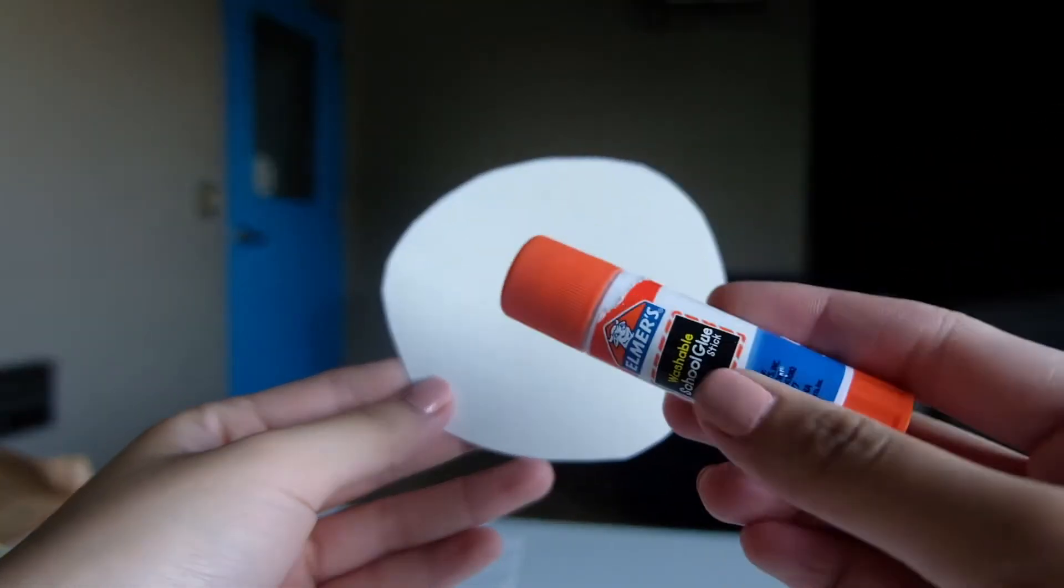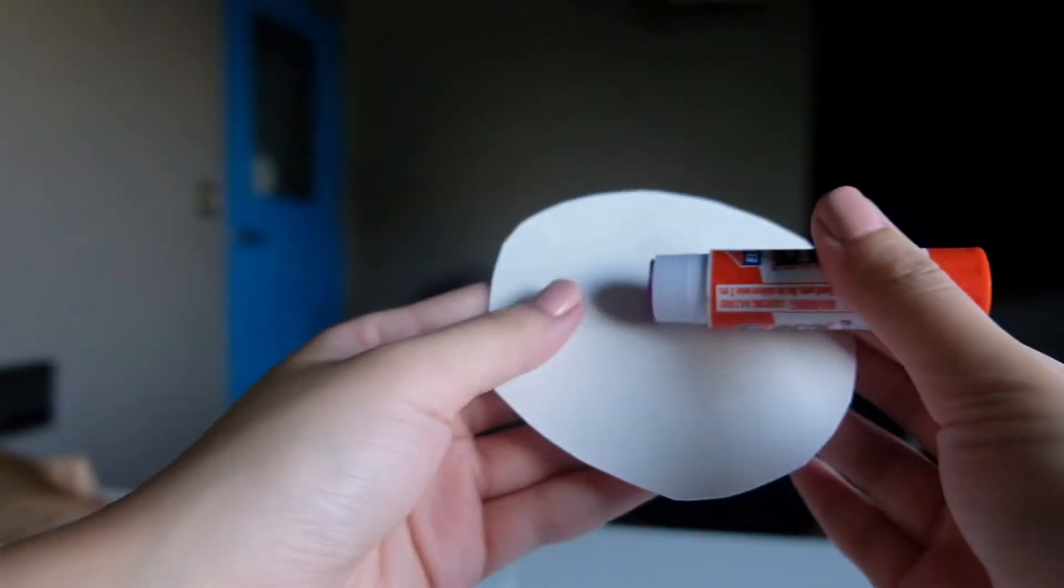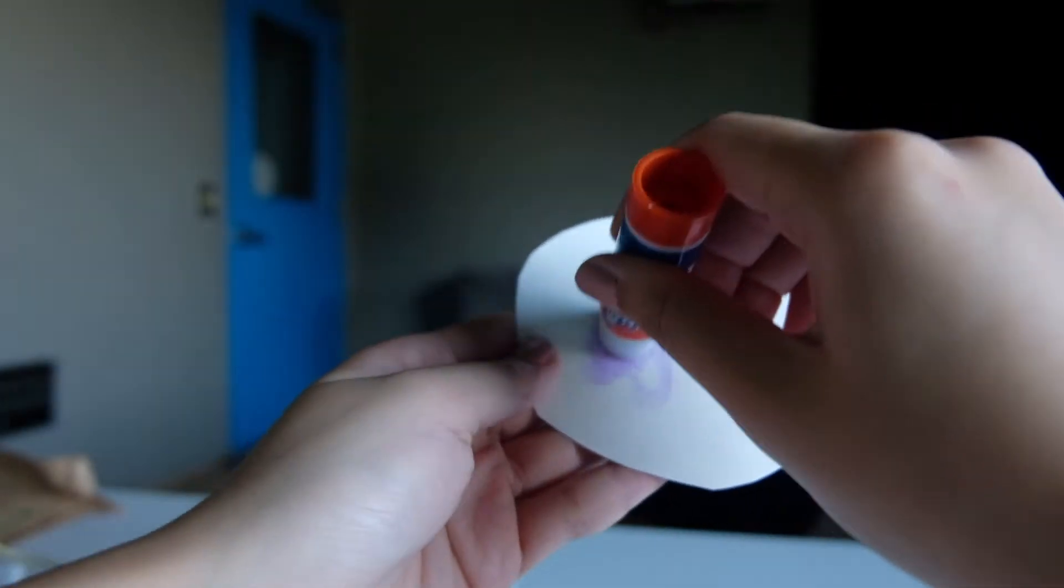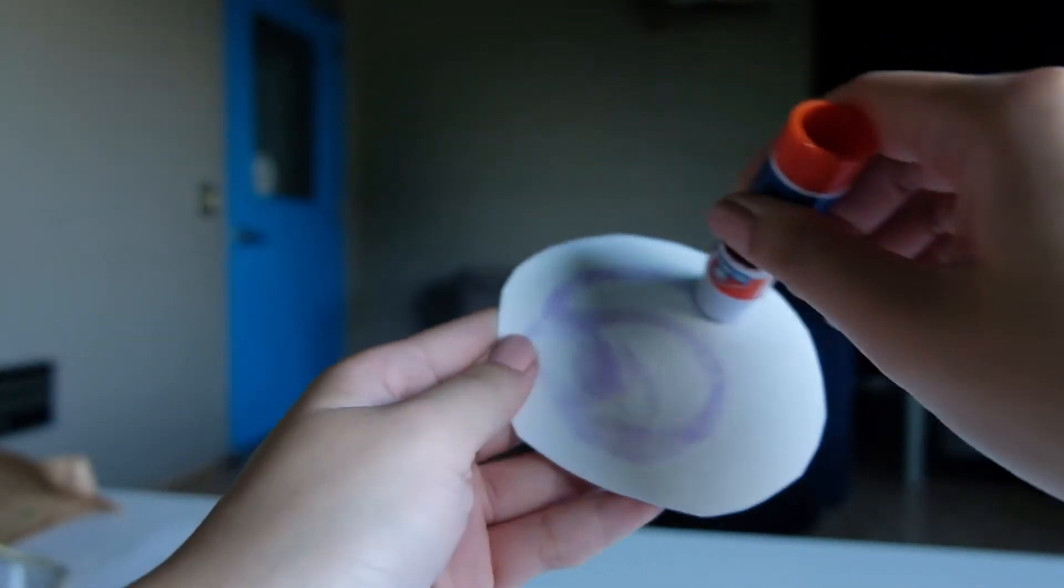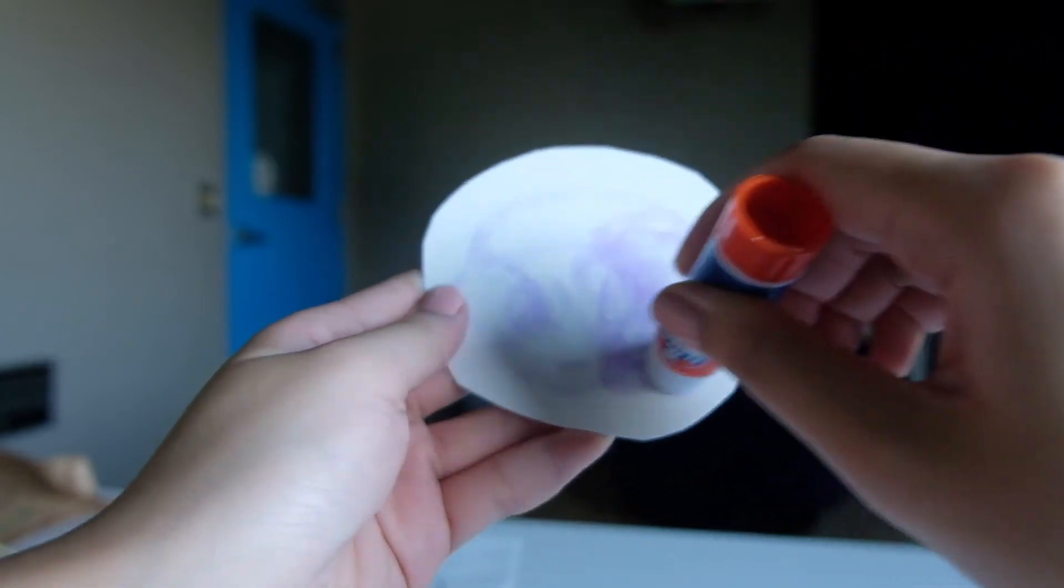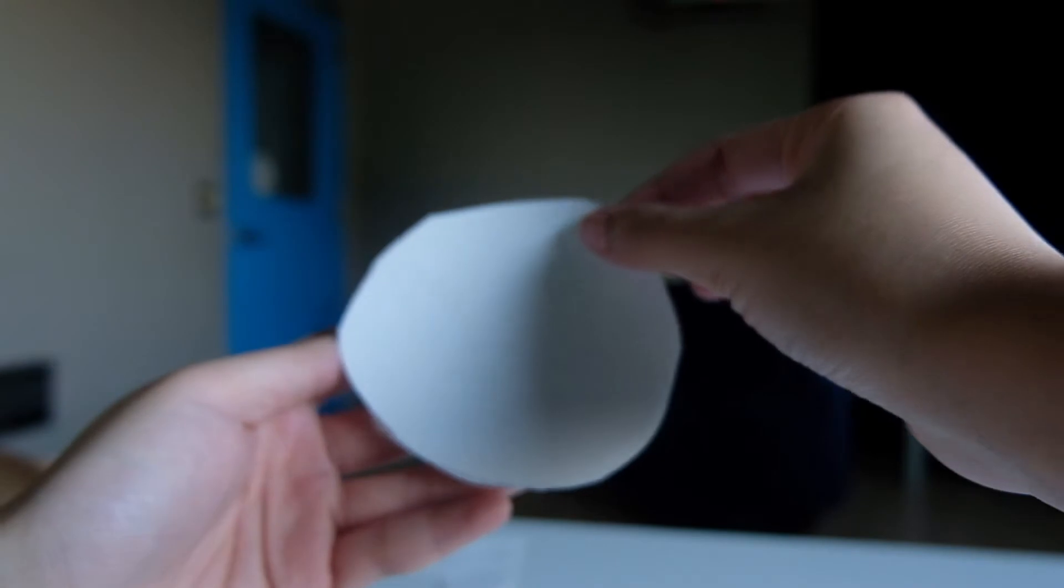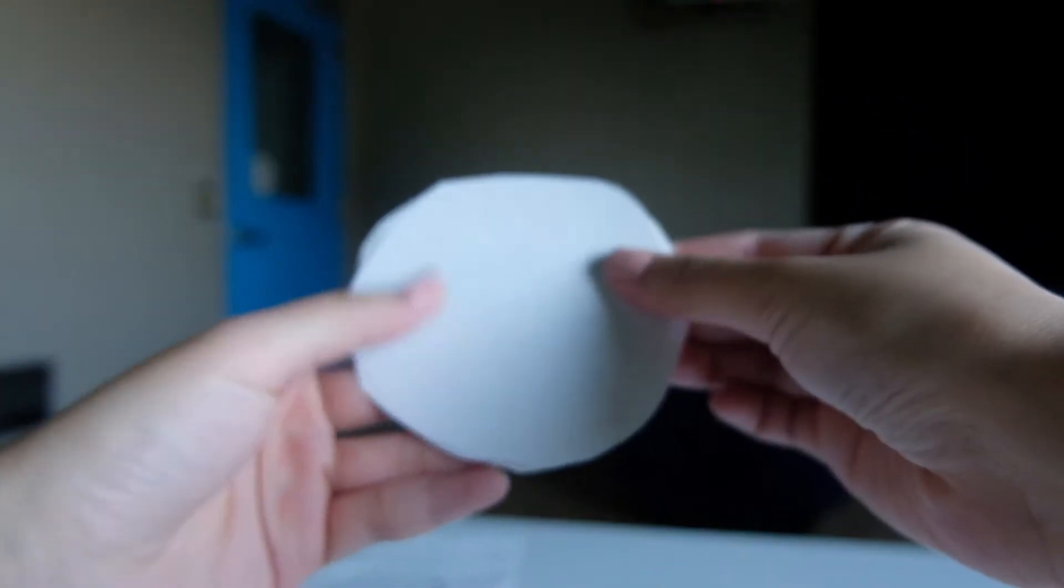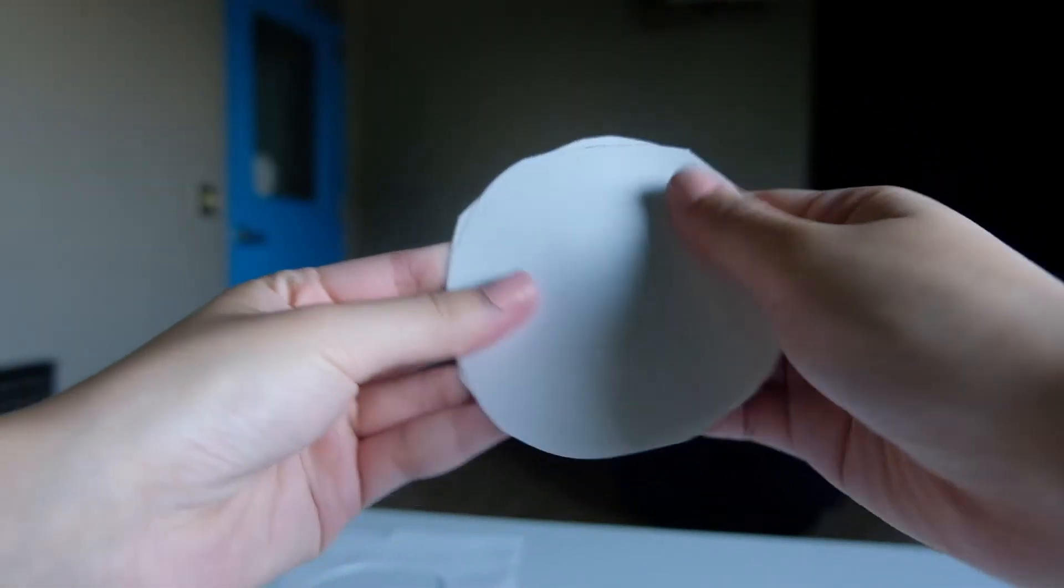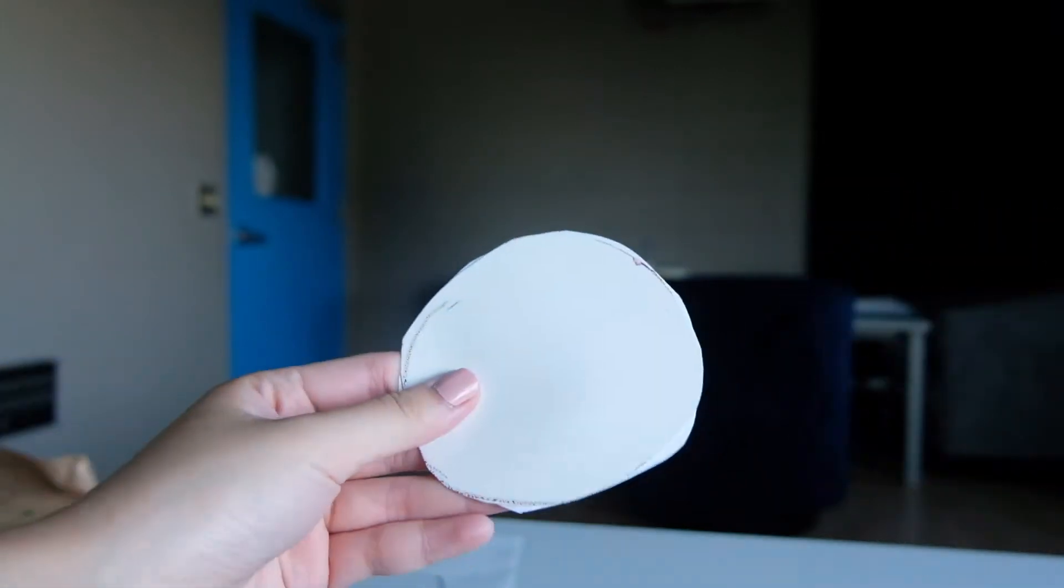Next, we are going to be gluing all three of our circles together. So first, grab your paper plate circle and using a glue stick or any glue that you have at home, put it on one side of the circle. You are then going to grab one of the circles that you cut out from the white paper and you're going to glue it onto the paper plate circle.